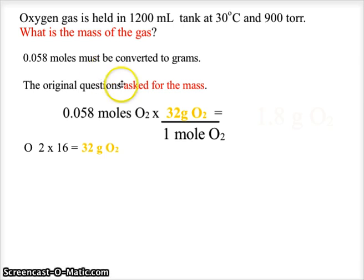We do that by setting it up as stoichiometry: 0.058 moles of oxygen times 32 grams divided by that one mole value. And we end up with a gram mass of 1.8 grams of oxygen being used in this chamber of gas.